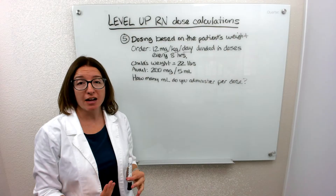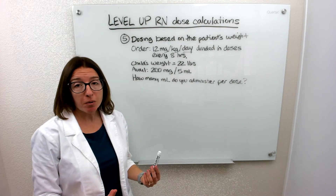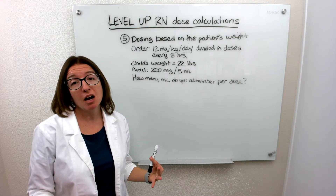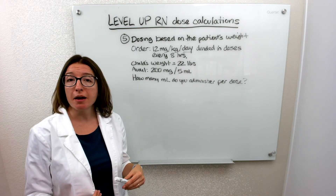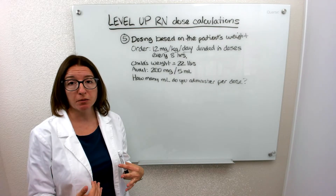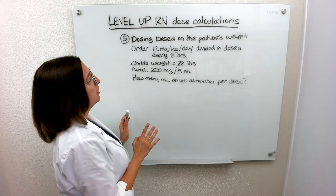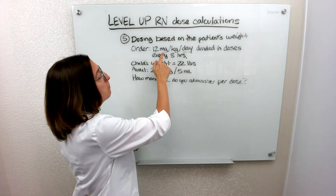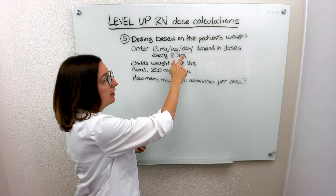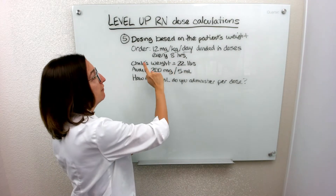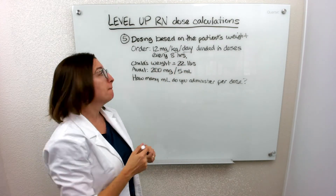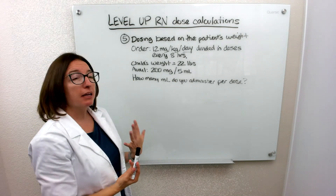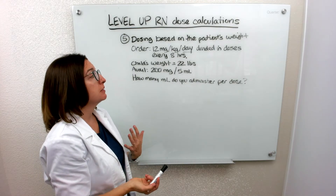Now I'm going to go over problem five, which is another problem where we're calculating the dose based on the patient's weight, but it's a little more complicated and we're going to have to go through multiple steps. In this particular problem, the doctor has ordered 12 milligrams of a medication per kilogram per day, divided into doses every eight hours. Our child weighs 22 pounds, and what's available is 200 milligrams in 5 milliliters.